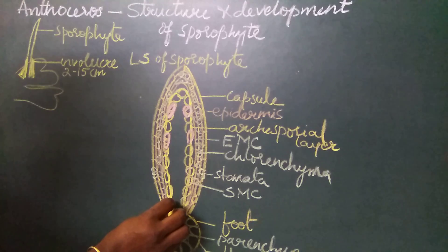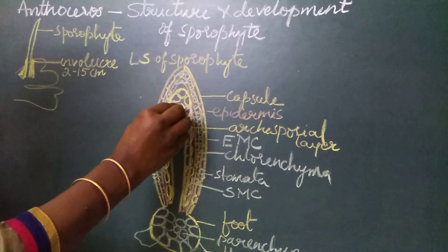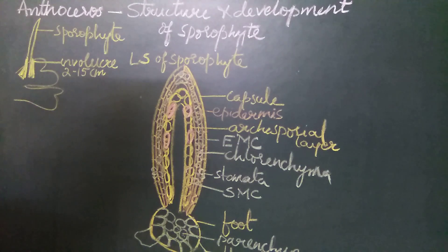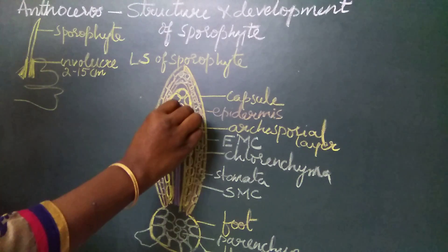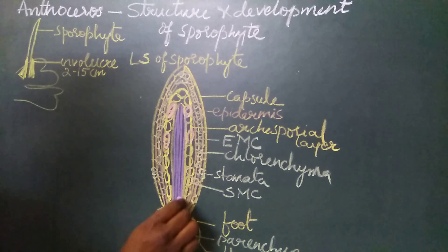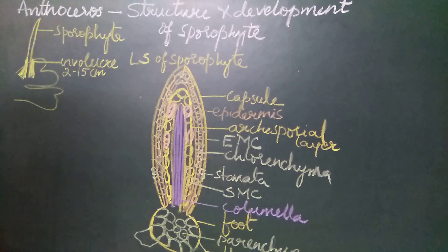The central region of the sporophyte consists of 16 vertical rows of cells. These 16 vertical rows of cells form the columella. Columella is a sterile tissue seen in the center of the capsule which supports the growth of the capsule when tender, and also helps in dispersal of spores at maturity.